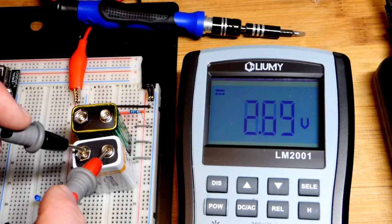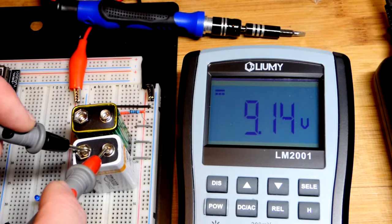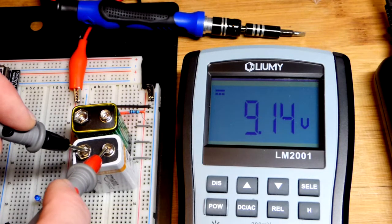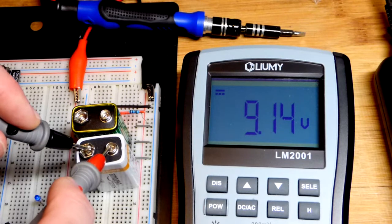And here is a battery that I thought I used a bit. And it is down to 9.14 maybe I did use it a little bit. But in any case there you can see it's close to 9.5 volts.